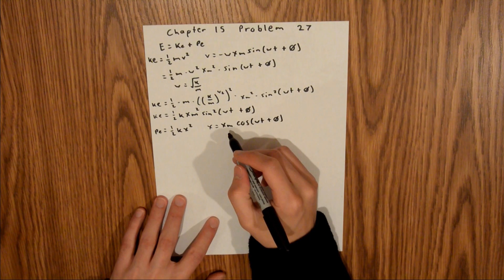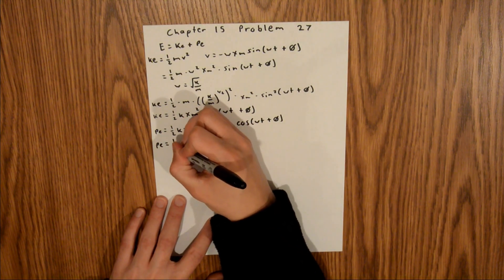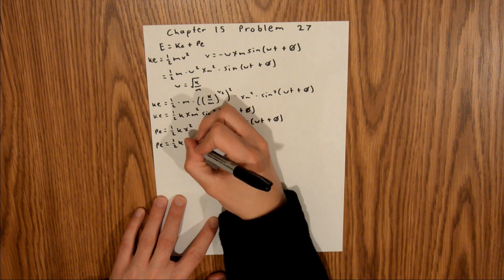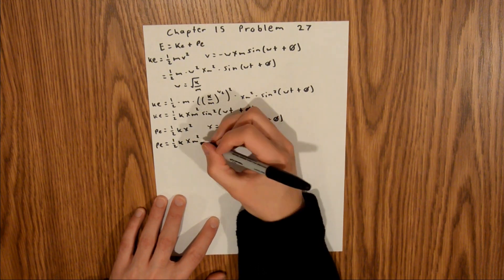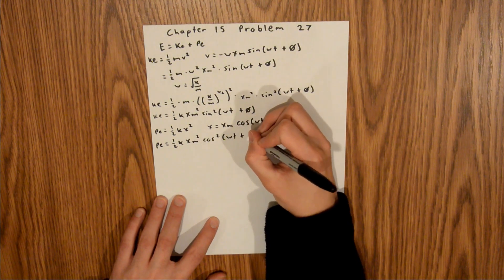And so again, we can plug that right into here. And so our PE is equal to 1 half kxm squared cosine squared omega t plus phi.